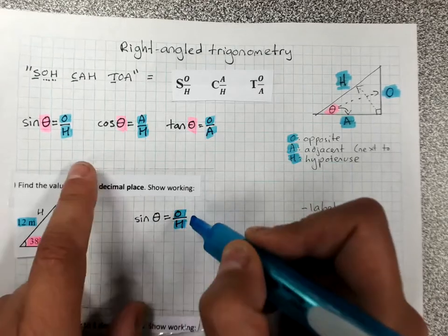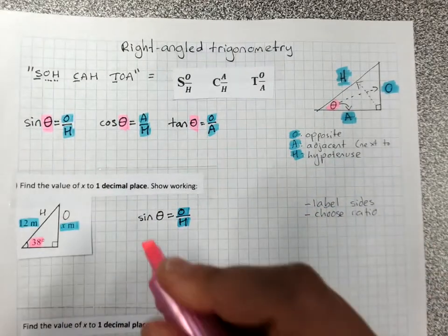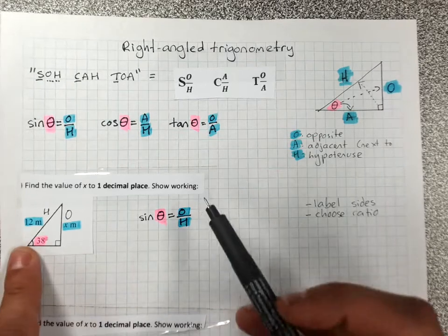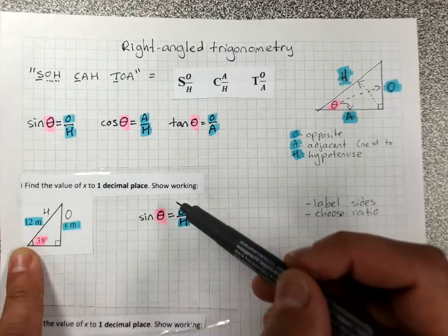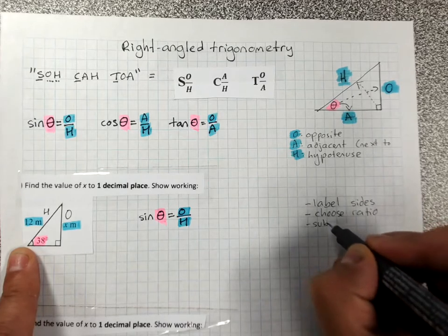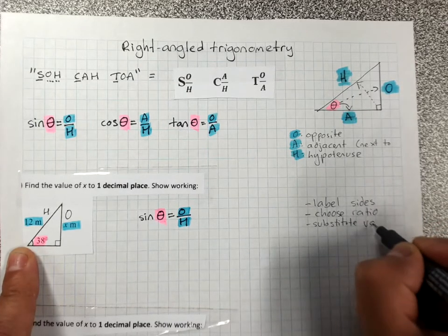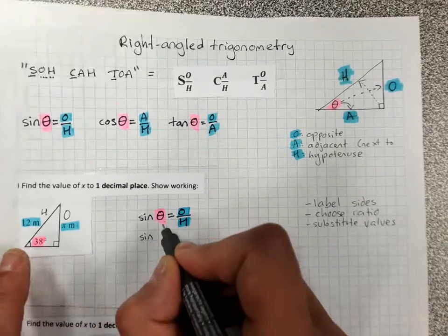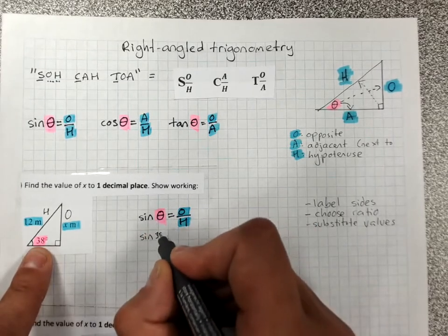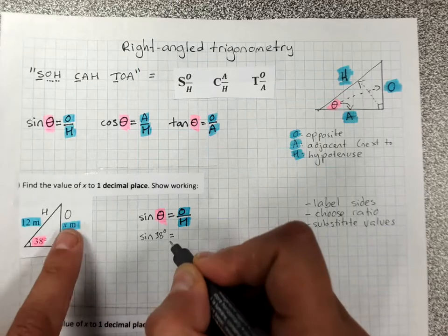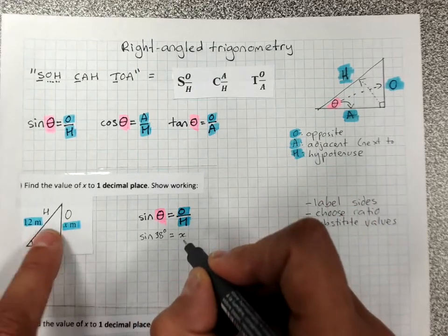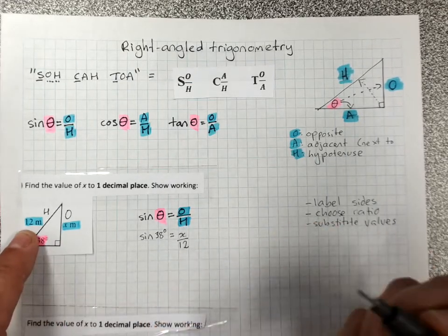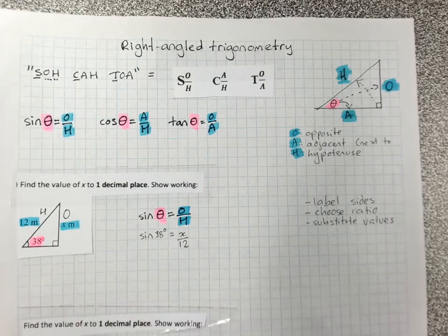Highlight the sides in blue and the angle in pink. Now, next step is we substitute the values that are here, over here. Sine, already there, theta, it's pink. It's 38 degrees equals O is x. Don't use the meters. That's just the measurement. Over H is 12. You've substituted the values.